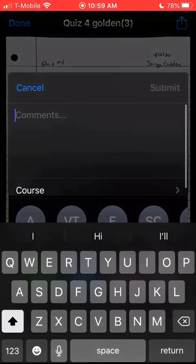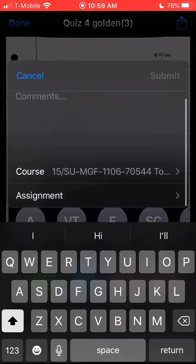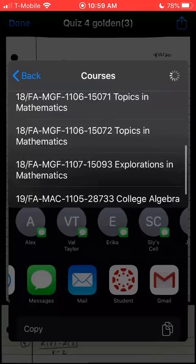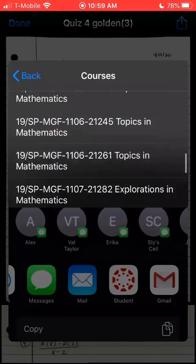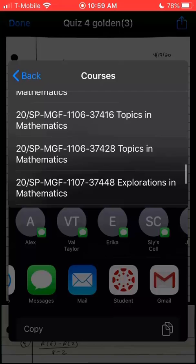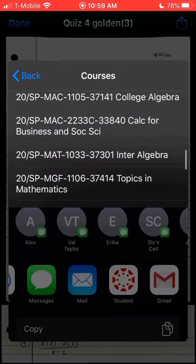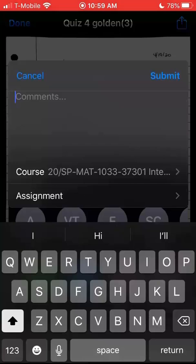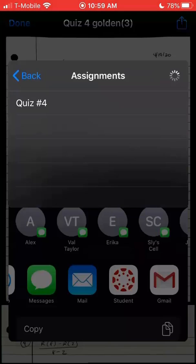I'm going to hit the student app. Notice it's going to give me the option to pick which course I want to put it into. Go ahead and find our class, whichever class ours is. I'm going to have this one here and then I choose an assignment. I'm going to upload this as Quiz 4.